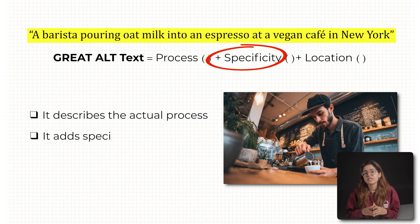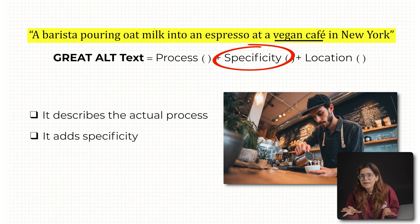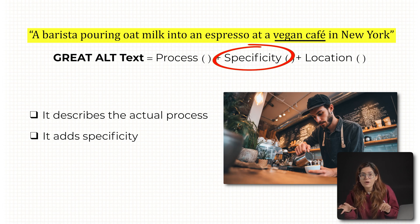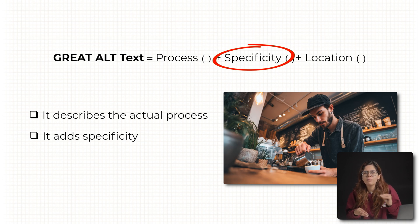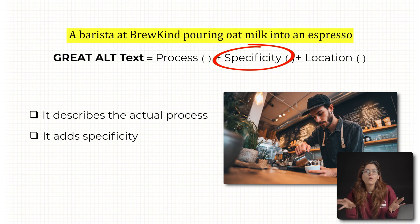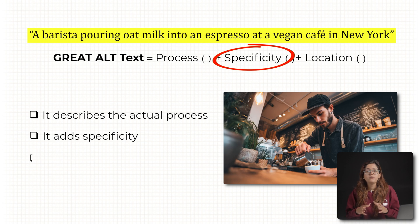Number two: it adds specificity. Instead of 'a cafe', it says 'vegan cafe'. Even better, you can replace that with an actual brand name — like 'a barista at Brewkind pouring oat milk into an espresso'. That brand mention is gold for visibility.